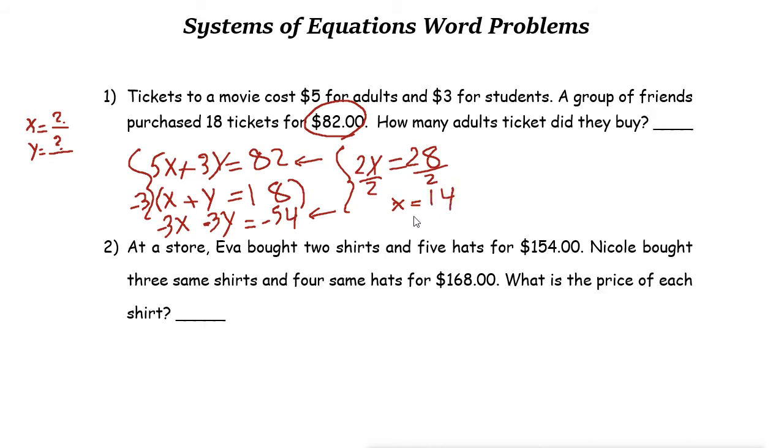So number of adults is 14. And we know that the total number is 18, so the number of students is 4. And if you check your answer: 14 times 5 dollars is 70 dollars, and 4 times 3 is 12, plus 12 dollars, the answer is 82 dollars. Is that true? Yes, it's provided here, 82 dollars.